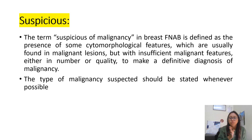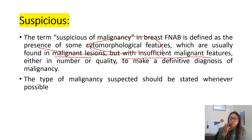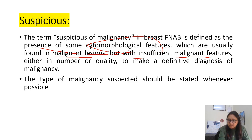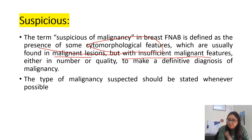The fourth category is suspicious — moving towards malignancy. Here there are cytomorphological features that are found in malignant lesions, but with insufficient malignant features to confidently label it as frankly malignant. We keep it in the suspicious category. The type of malignancy should be suspected and specified — for example, adenocarcinoma, IDC, ductal carcinoma, or lobular carcinoma.